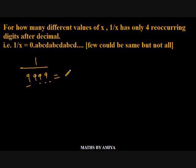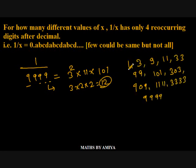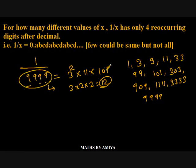9999 is nothing but 3 squared into 11 into 101. According to the number system, we have 3 times 2 times 2, that is 12 factors. The factors include 1, 3, 9, 11, 33, 99, 101, 303, 909, 1111, 3333, 9999. So there are 12 factors of 9999.